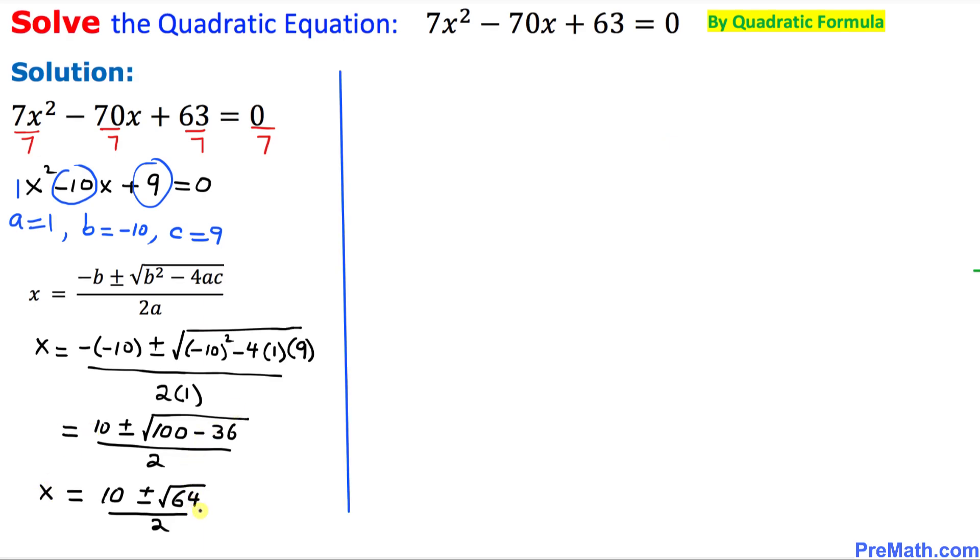Since we are running out of space, I am going to move over here. Our next step is going to be x equals 10 plus or minus the square root of 64, which is simply 8, divided by 2.